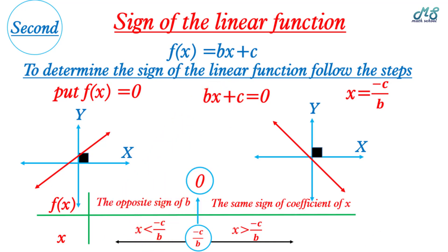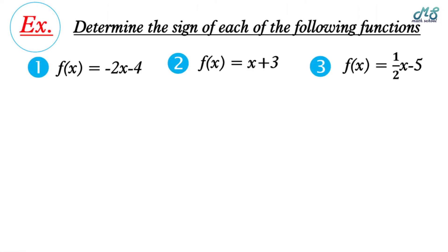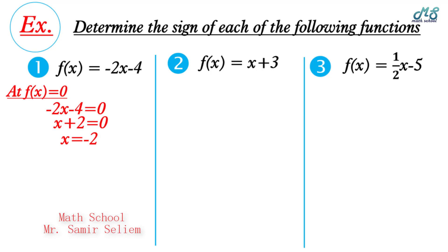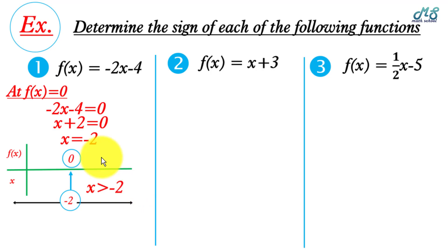Example: determine the sign of each of the following functions. Number one, f(x) = -2x - 4. First step, put f(x) = 0: -2x - 4 = 0. Divide both sides by -2, we get x + 2 = 0, so x = -2. At x = -2, f(x) = 0. At the right, x is greater than -2, the sign of the function is the same as the sign of the coefficient of x.